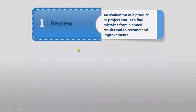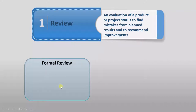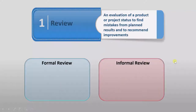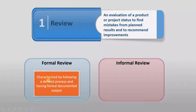Moving towards the types of review — broadly, review is divided into two types: formal review and informal review. Formal review is characterized by following a defined process and having formal documented output. In a formal review, all the steps are defined — first you do this step, then this step. The output is also documented in a certain format in which you have to provide your results.